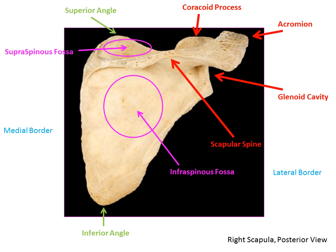Looking at a right scapula from the posterior view, starting with the borders: the medial border is the edge closest to the spine. Following counterclockwise we come to the inferior angle, then the lateral border and the superior border. Our second angle is the superior angle, which is a small ridge that looks like a bump on top of the medial end of the scapula. So we have four borders — medial, lateral, superior, inferior — and two angles — superior and inferior.